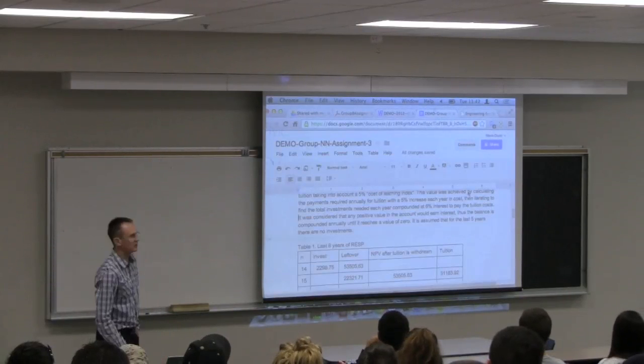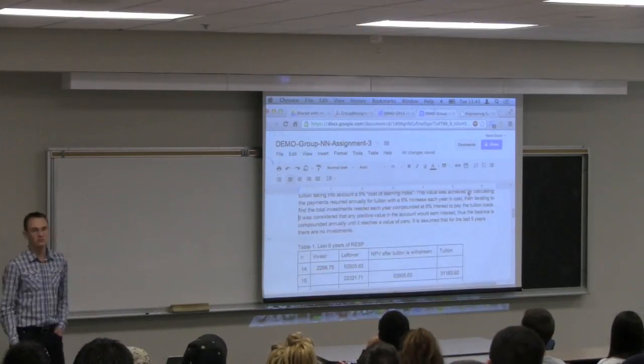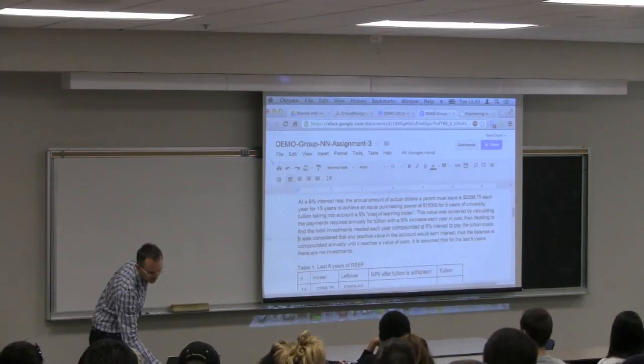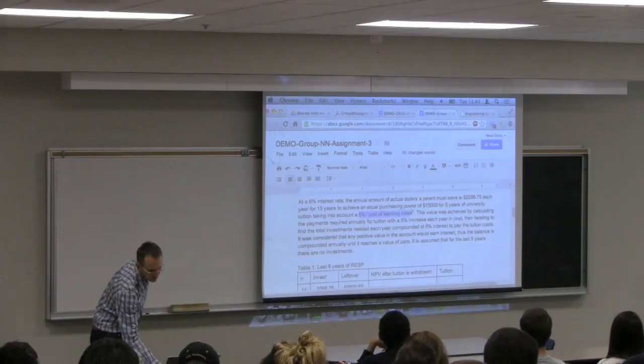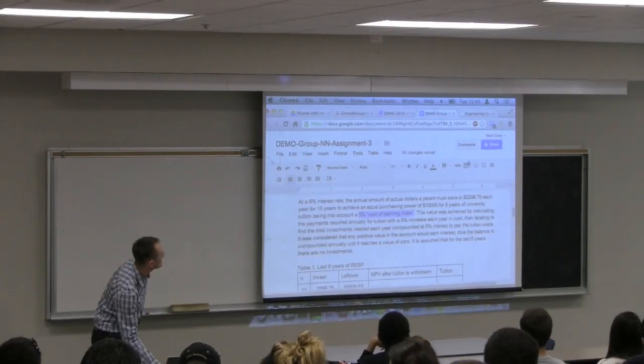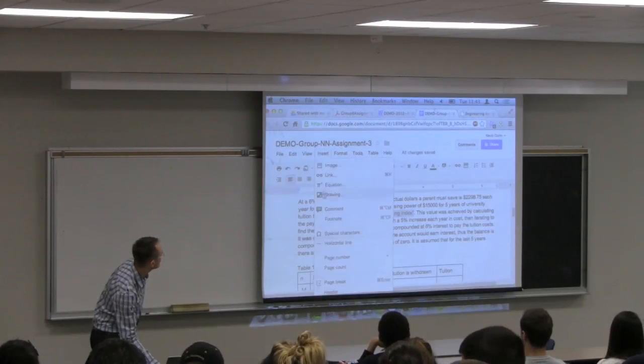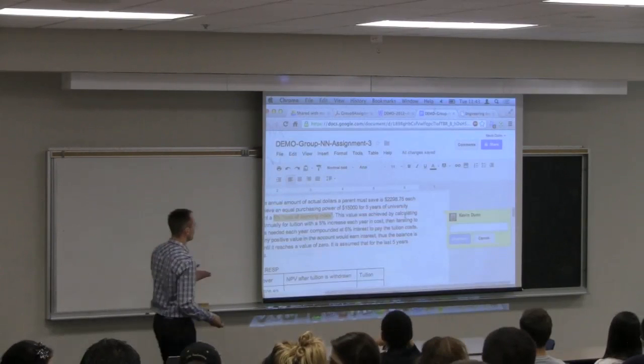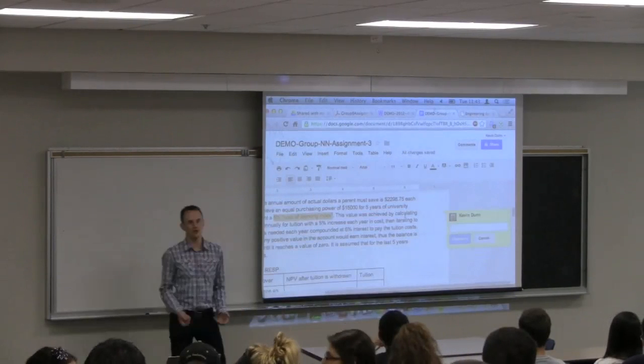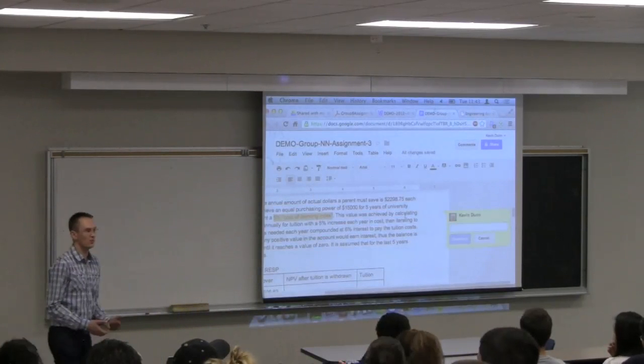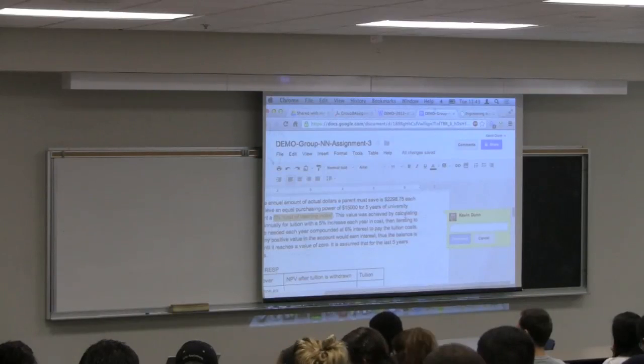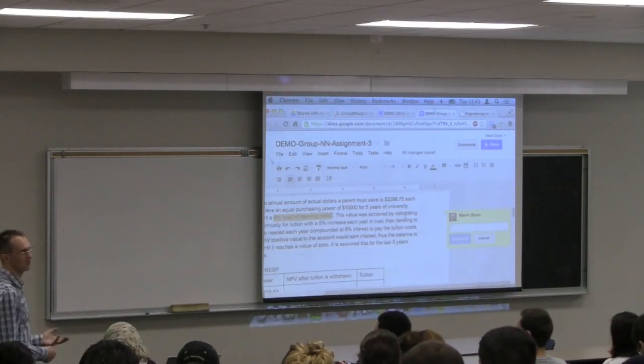If you submit a native Google document, the TA and myself can be a bit more effective with the commenting. What we can do then is we can select right where the error is. For example, if you should have used 7% instead of 5%, I can highlight that and then go insert comment right over there, and it highlights it for you where exactly your error occurred. We're going to emphasize that we must submit Google documents, not the Word document, not import it or just share it through Google Drive.